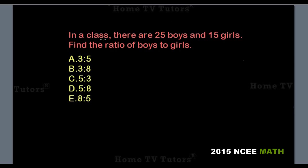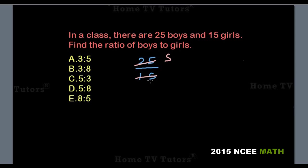In a class, there are 25 boys and 15 girls. Find the ratio of boys to girls. The ratio is 25 to 15. If we divide both by 5, we get 5 for the boys and 3 for the girls. So the ratio of boys to girls is 5 to 3. The answer option C is the right answer.